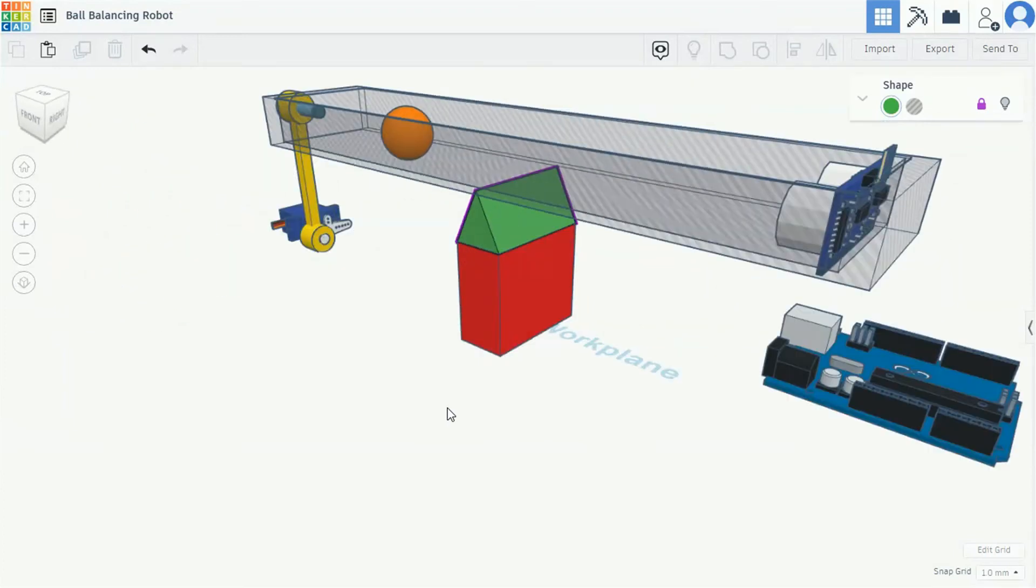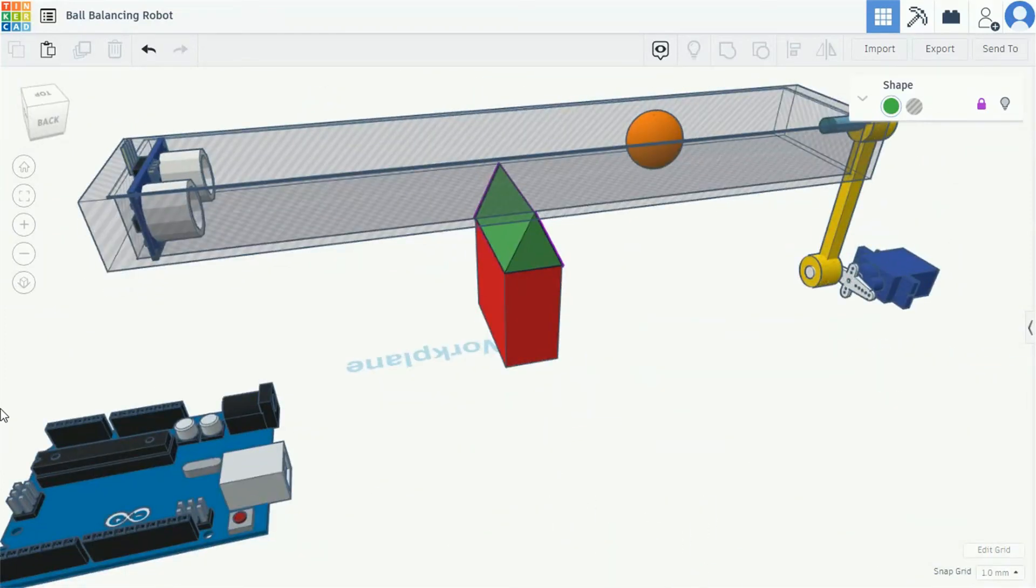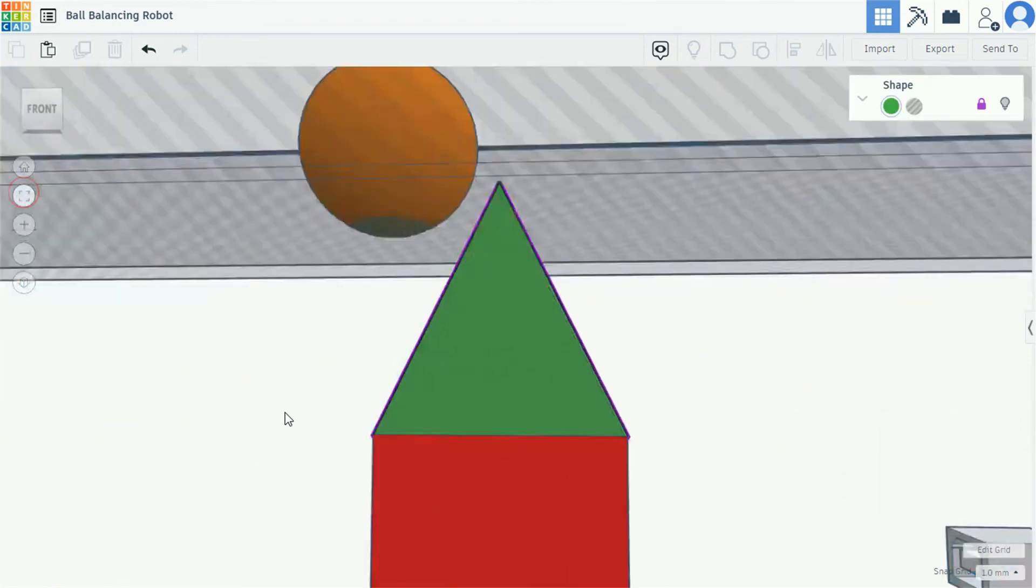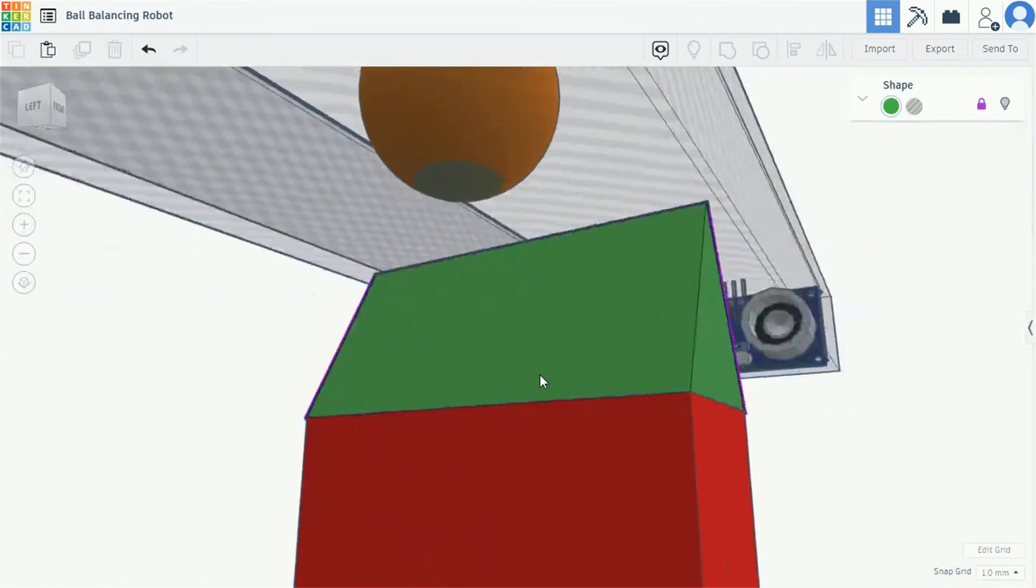This is the CAD design of the ball balancing robot. Here we can see a ping pong ball placed inside the box. This ball is free to move in the box. The box is placed on the side of the triangular edge such that the box can act as a seesaw.